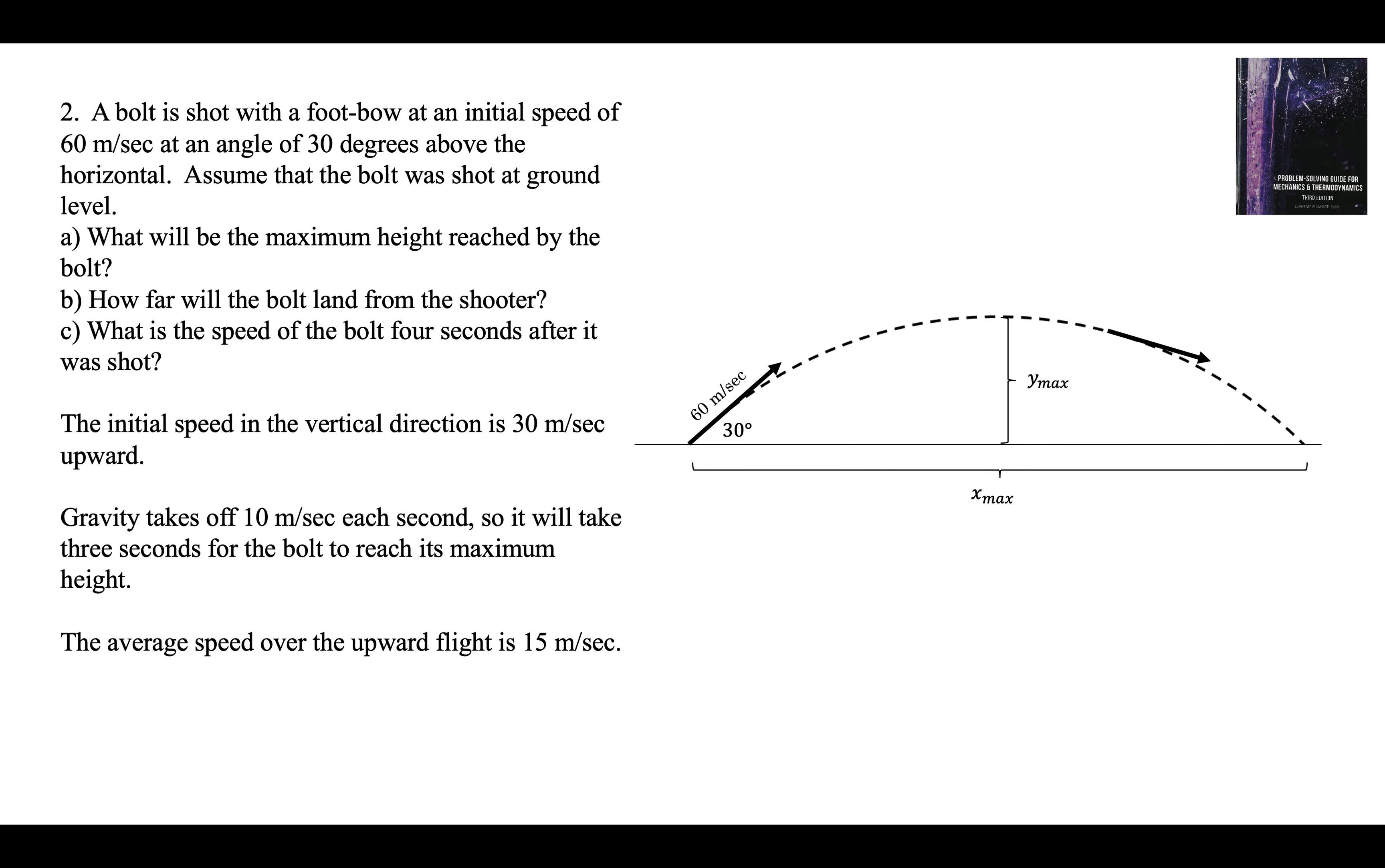At the maximum height, the y component of the speed is 0. 30 to 0, the average is 15 meters per second. If our average is 15 meters per second for 3 seconds, that's 45 meters. So the maximum height, the answer to part A, is 45 meters.